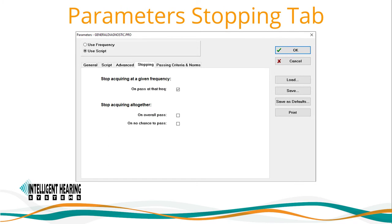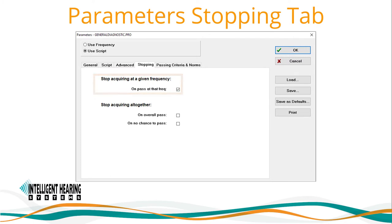The next tab of the parameter menu is the stopping criteria tab. Here you can select to stop acquiring at a given frequency on a pass at that frequency. This option is helpful in speeding up the test if you have selected to use block sizes. You can also select to stop acquiring on an overall pass or no chance to pass, and these decisions are based on user-defined passing criteria.